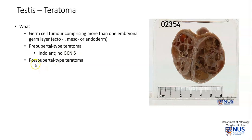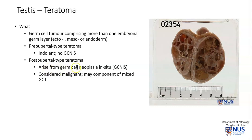And there is the postpubertal type teratoma, which is more common, and this arises from a background of germ cell neoplasia in situ. These are considered malignant, and they can also be part of a mixed germ cell tumor — for example, there can be teratomatous components and components of yolk sac tumor. One thing to note is that even though they are named prepubertal and postpubertal type, either one can occur in children or in adults.